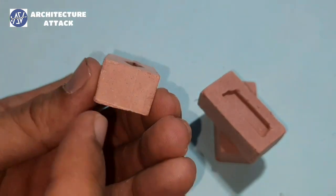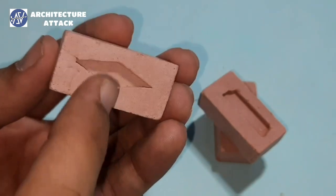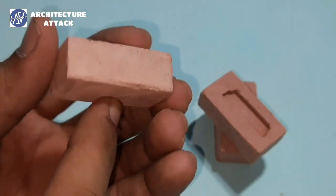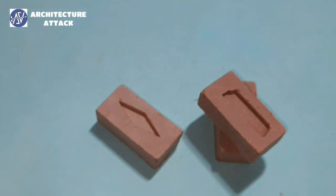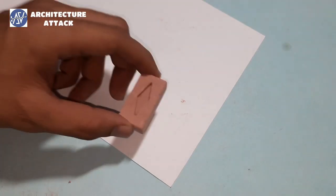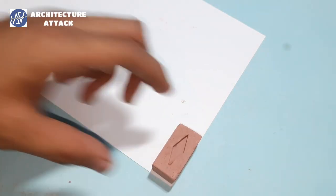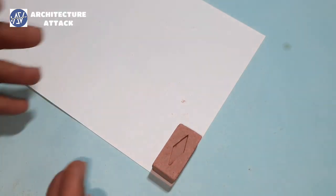Once again: this is header face, this is stretcher face, this is frog, and this is bed. These edges are called arris. Let's start with stretcher bond.